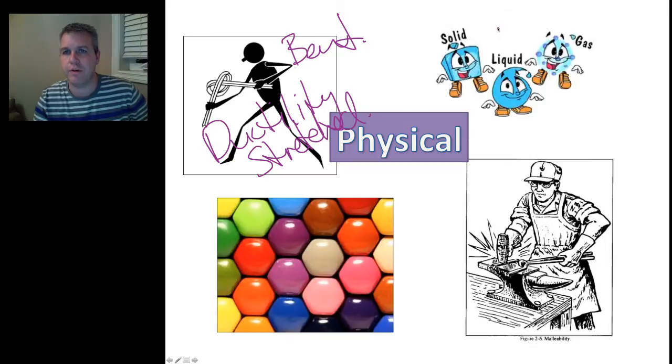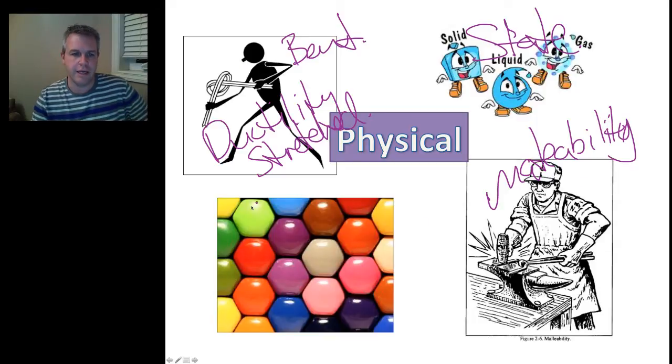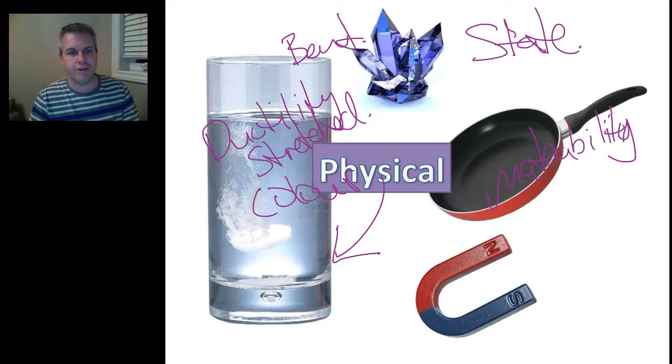When we look and we change the state of something or the state that it's in, it doesn't actually change. And over here is malleability. And over here, of course, is color.